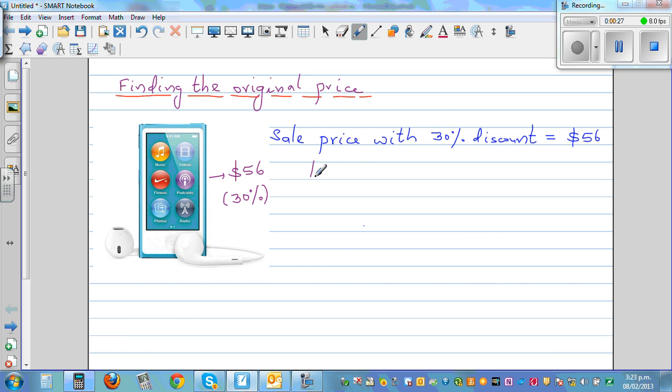So we'll start like this. Let the original price, OP, equal X. Can we write this as: the original price minus 30% of the original price equals 56?